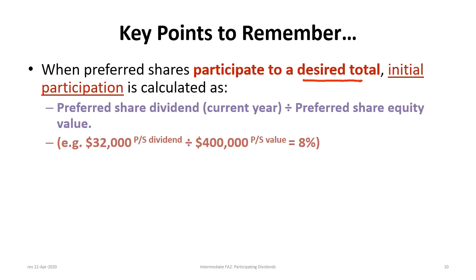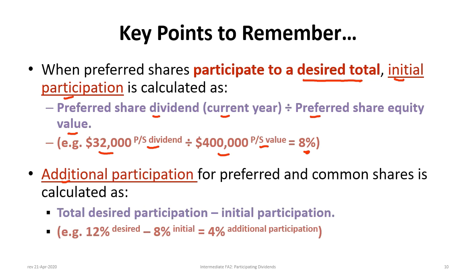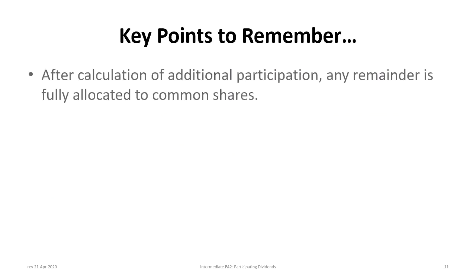When preferred shares participate to a desired total, the initial participation rate is the current year preferred dividend divided by the preferred share equity value — $32,000 divided by $400,000 is 8%. The additional participation rate is the desired total of 12% minus 8%, giving 4% additional applied pro-rata to both preferred and common. After any additional participation, the remaining remainder is fully allocated to the common shareholders.